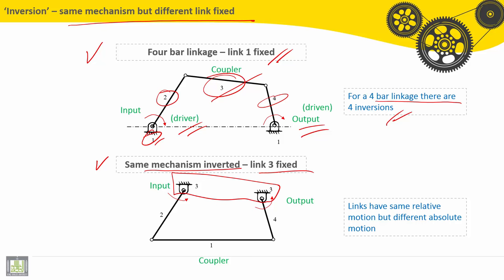The input is still with link number two. The output will be with link number four, and link number one will be the coupler. Here, links have the same relative motion but different absolute motion.